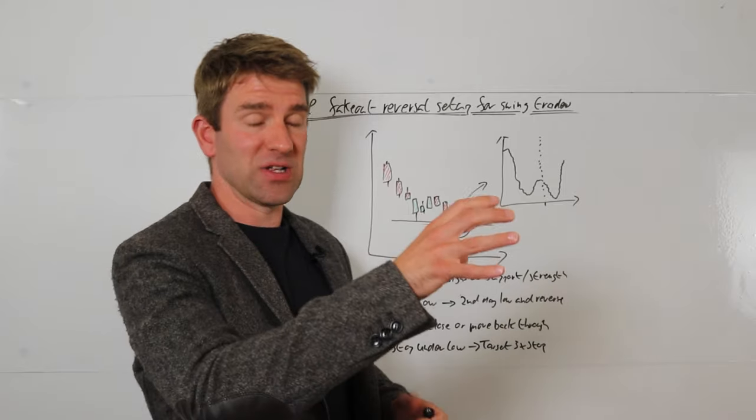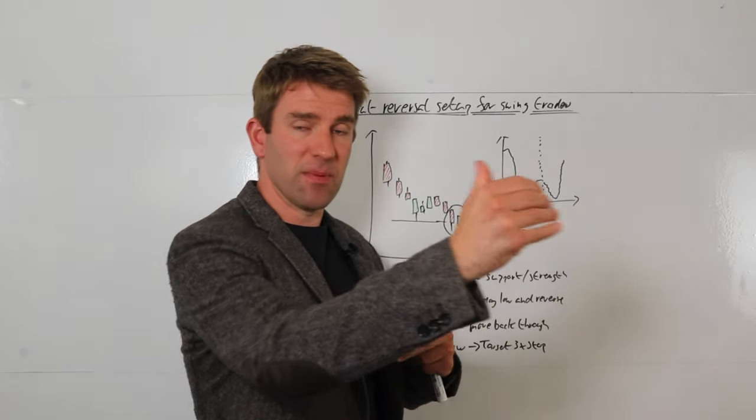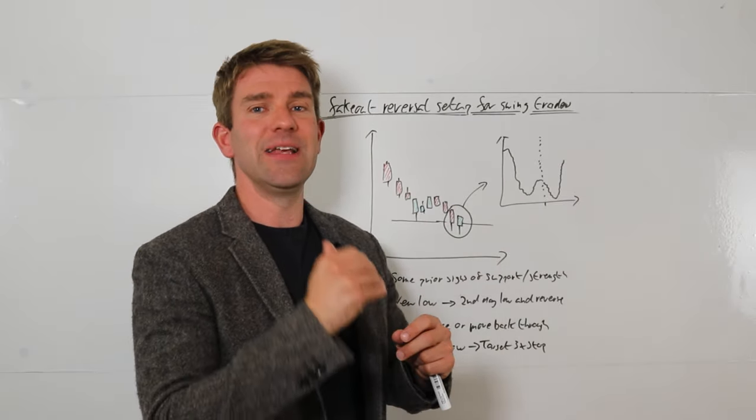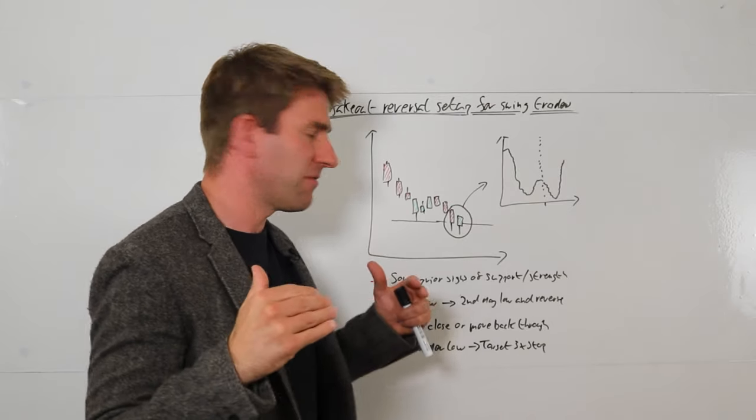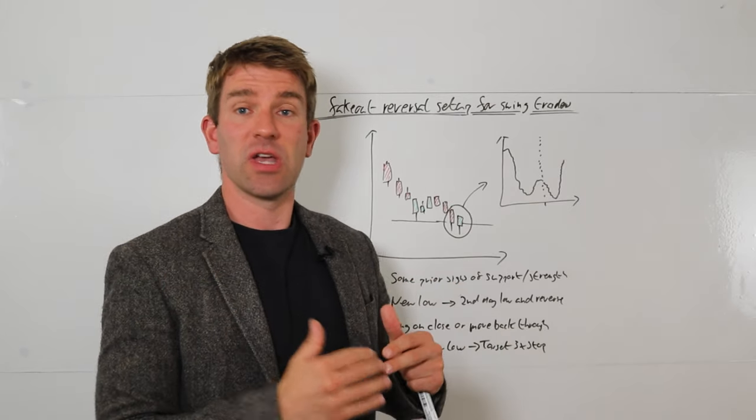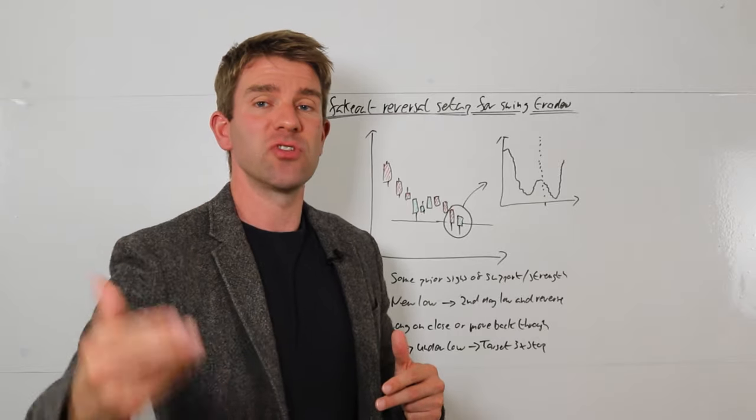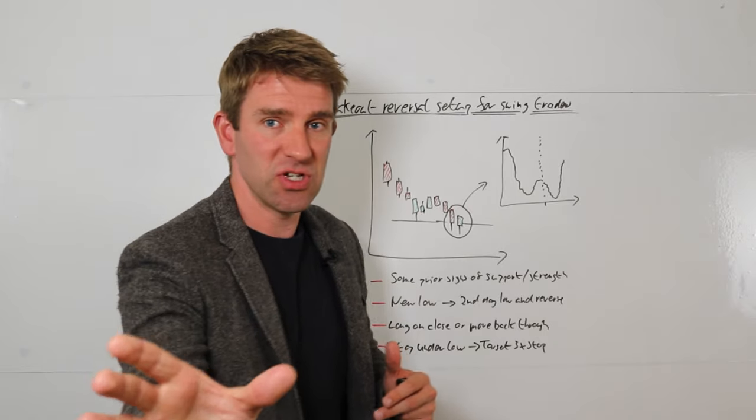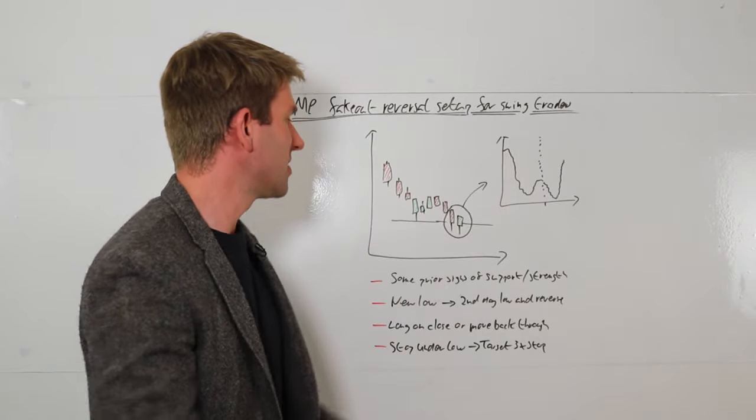Like I mentioned earlier, if using the first pullback type trade with the first type of move lower. So we're not literally just trying to buy in front of a steam train here. We're saying okay, we've already got some strength, now we're trying to time when we're going to get continuation of the move back to highs.